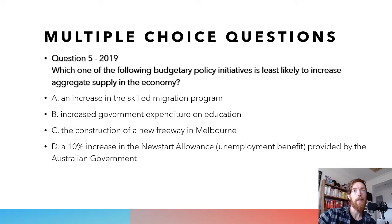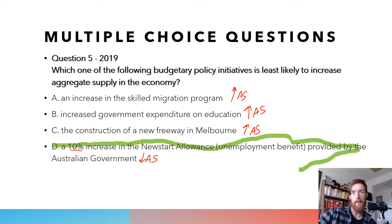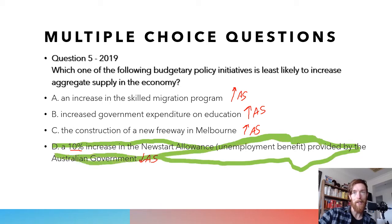An increase in skilled migration increases productive capacity and aggregate supply. Increased government expenditure on education — people will be more skilled, increases aggregate supply. New freeway infrastructure spending — greater productive capacity, increases aggregate supply. A 10% increase in Newstart allowance — more generous welfare means people are less likely to want to work, which is going to decrease aggregate supply. So that's the correct answer — it's the only one that decreases aggregate supply.